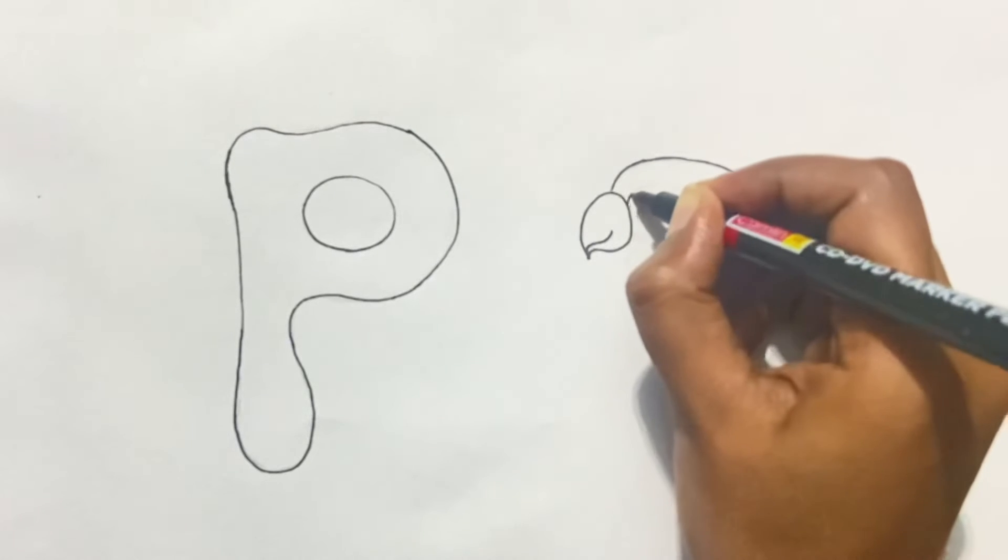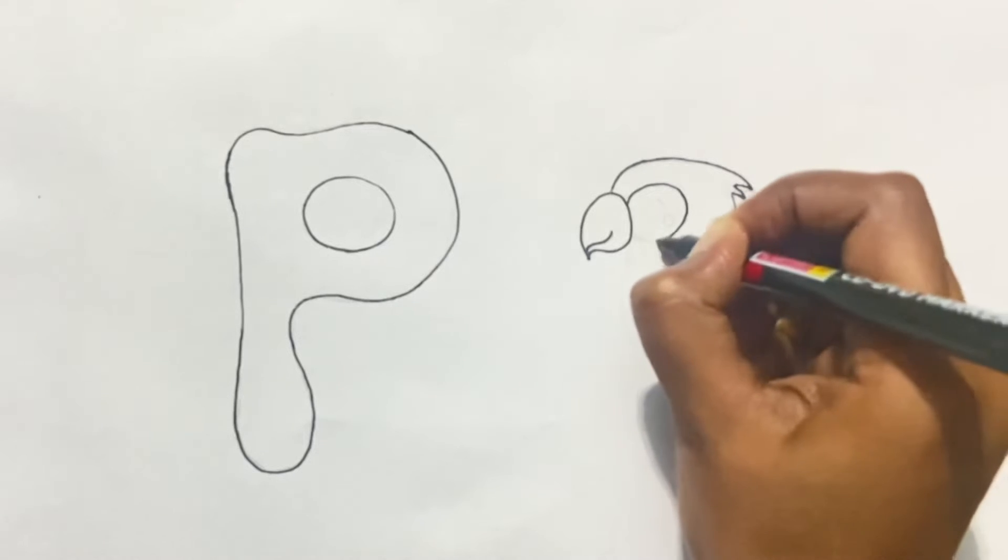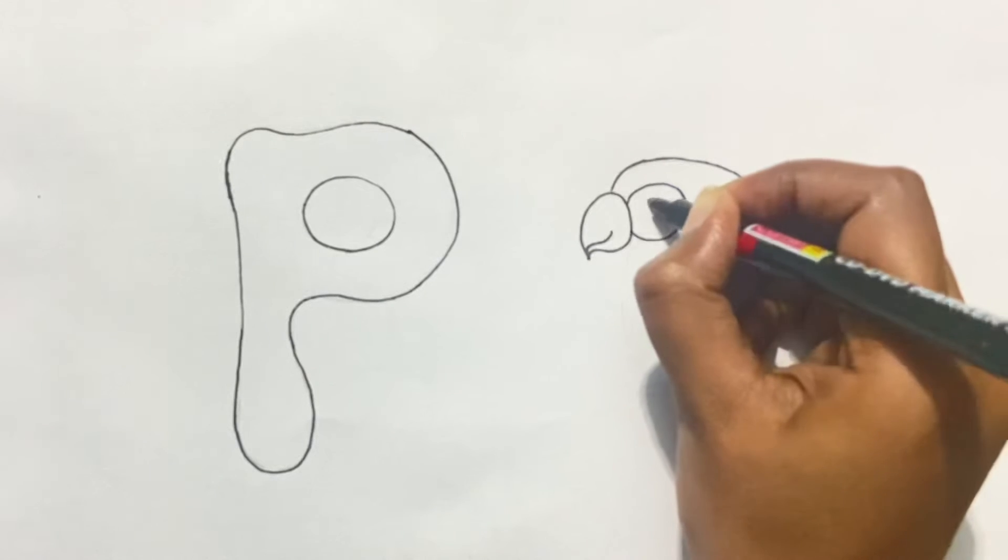Add a small line in between. Now we'll make a big circle to make the eyes of the parrot, and then two small circles inside it.